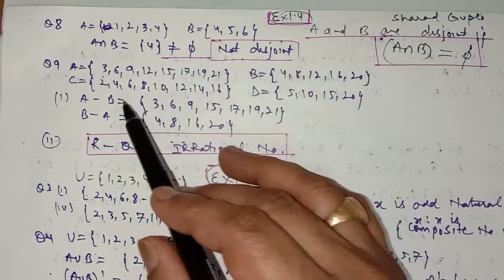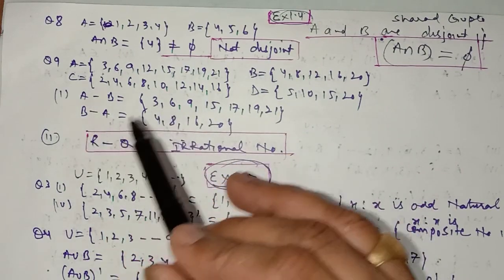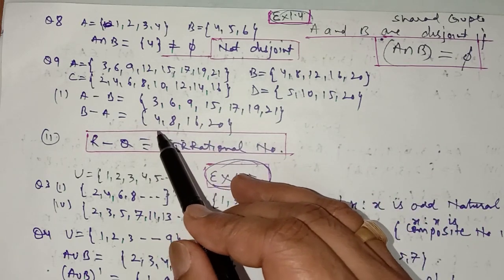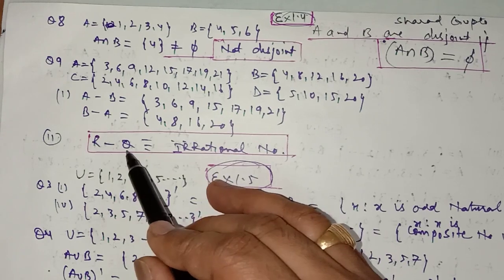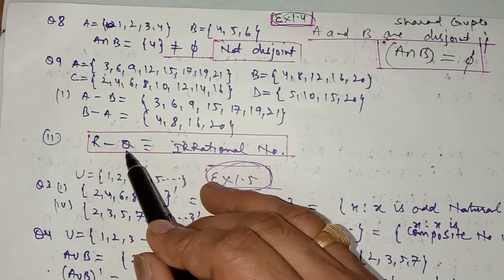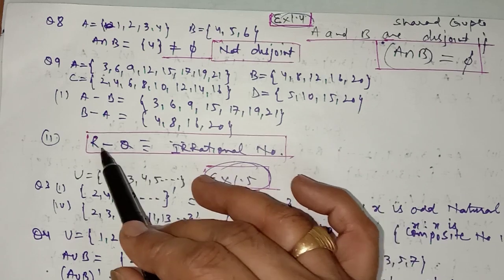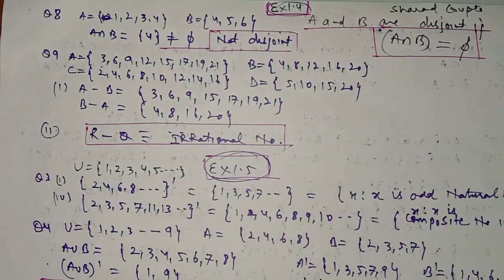In question number 9, you have to find A minus B and B minus A. A minus B contains elements in A but not in B, and B minus A contains elements in B but not in A. In question number 11, R is the set of real numbers and Q is the set of rational numbers, so R minus Q gives the irrational numbers — elements in real numbers but not in rational numbers. In question number 12, find whether the two given sets are disjoint by checking if their intersection is empty. Thank you.